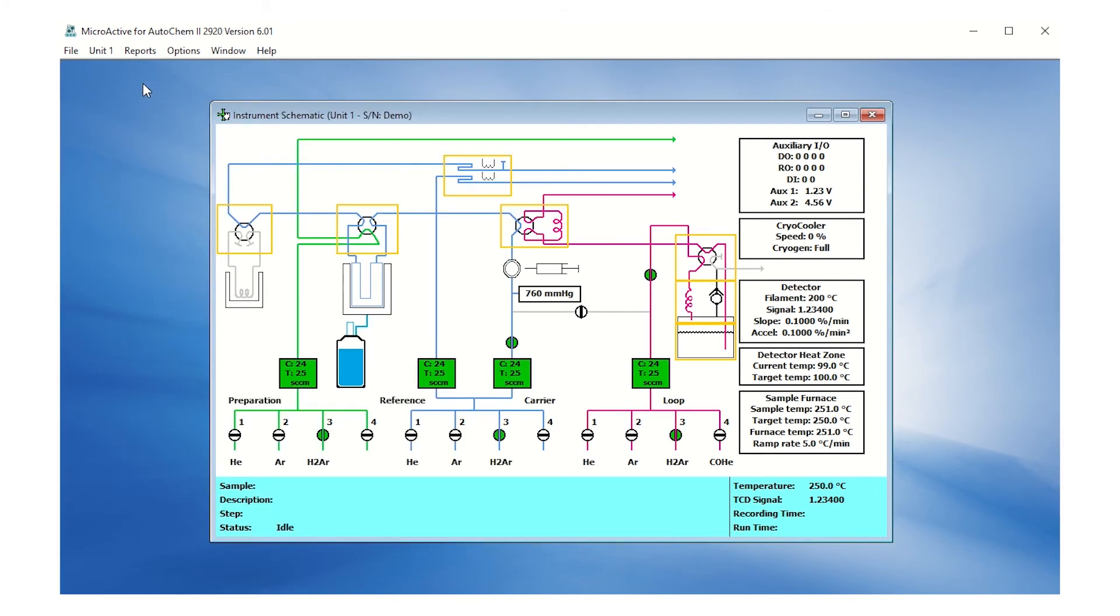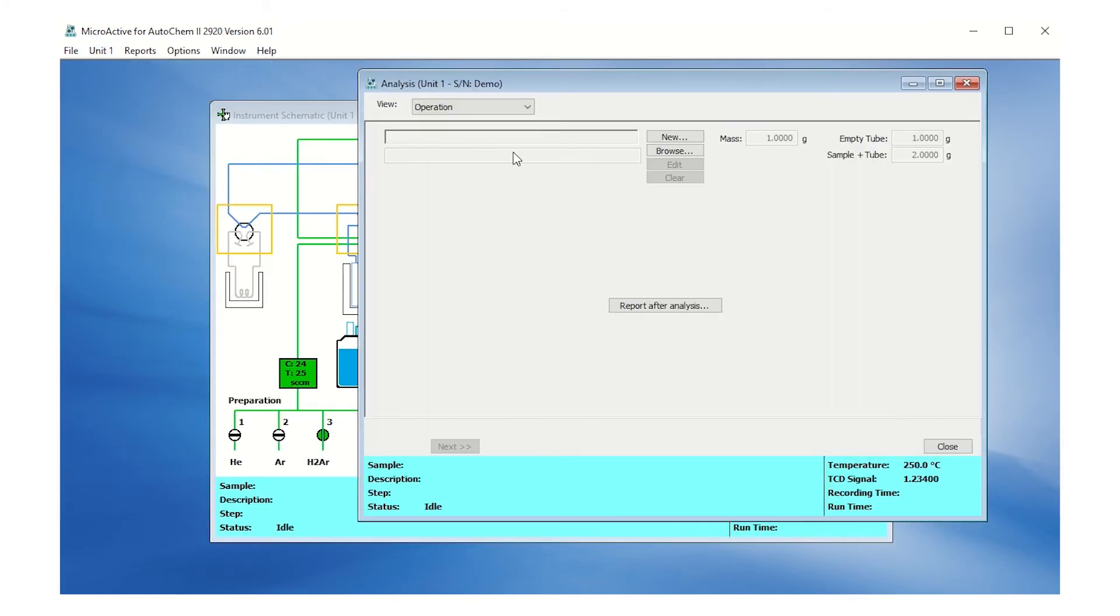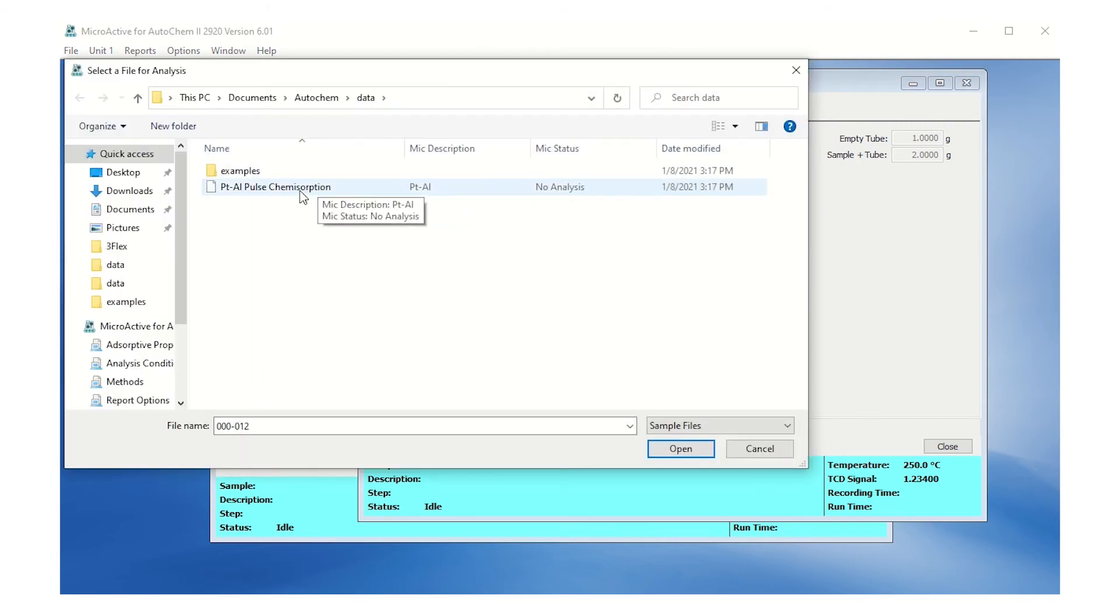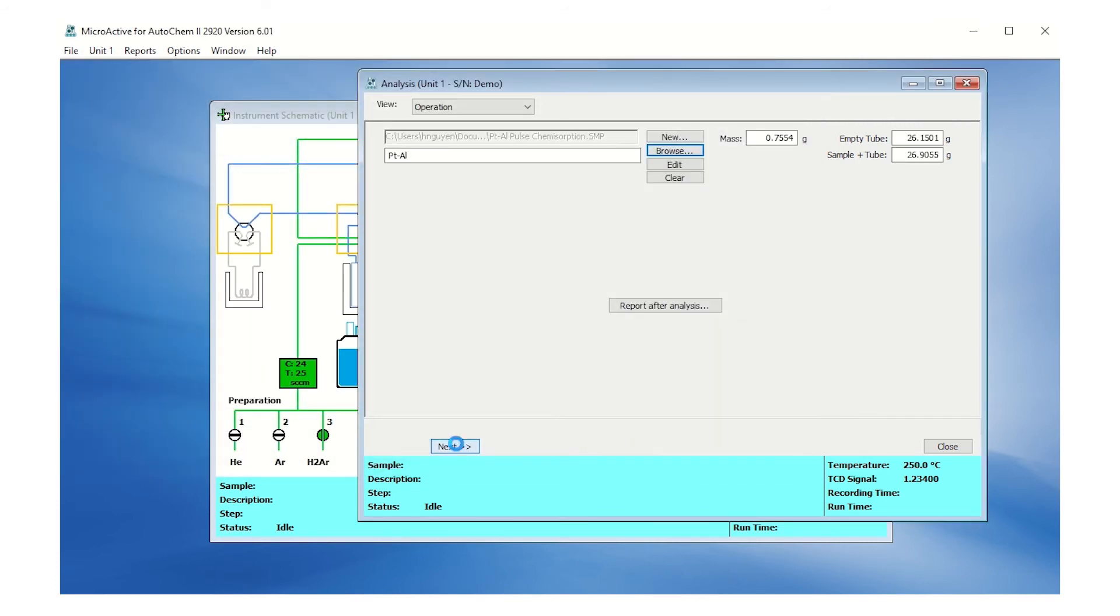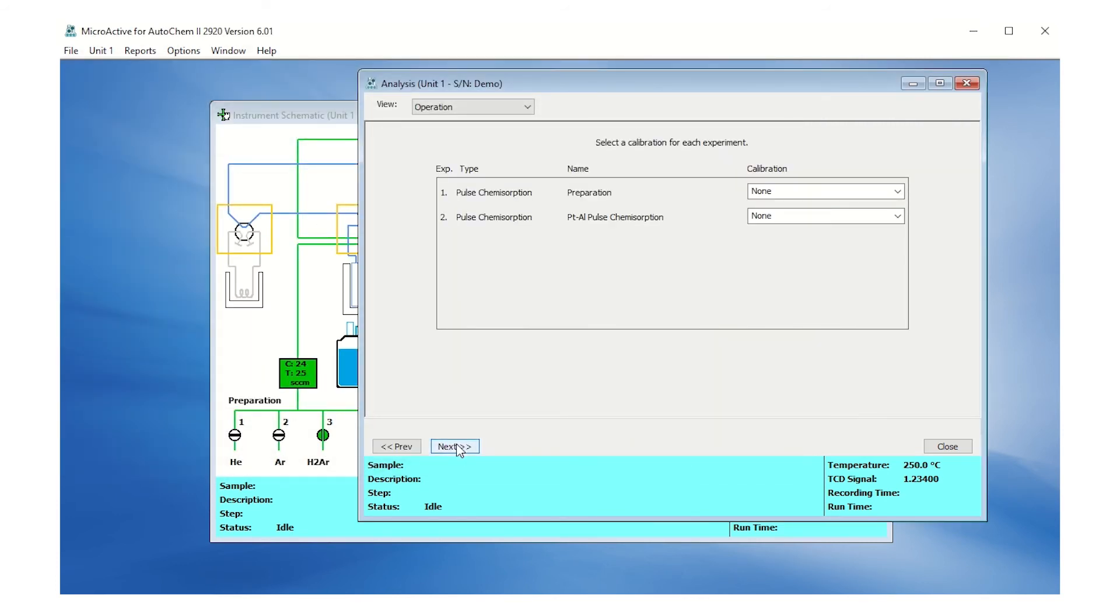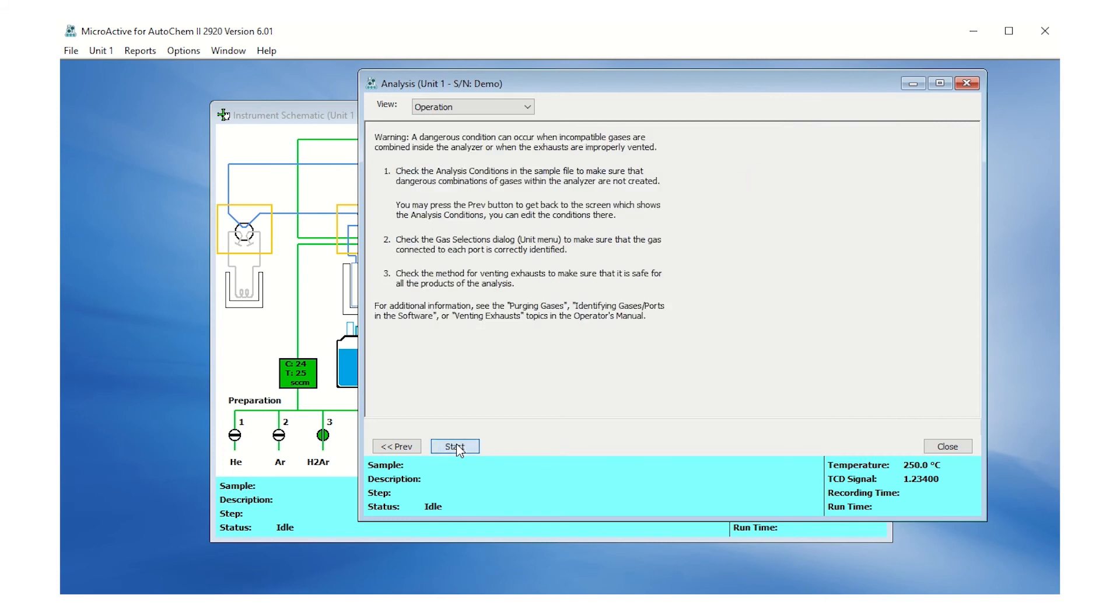To start the analysis, click on the Unit menu, Sample Analysis. Load the sample file and then click Next. No calibration files are needed on this screen. Click Next. Click Start to begin the analysis.